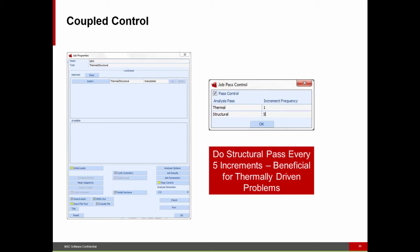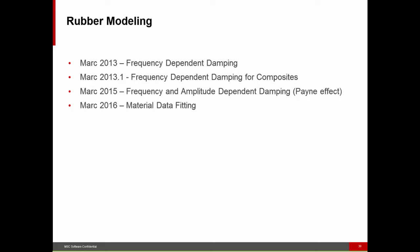One thing associated with these problems is that the increment size is often driven by the thermal problem or temperature-dependent thermal properties, not the structural problem. To reduce cost, you can say: do a certain number of heat transfer increments, then do one structural increment, and repeat. Since structural increments are usually much more expensive than thermal increments, this can substantially reduce computational cost.